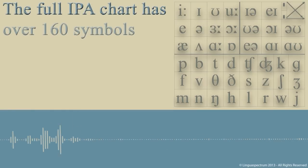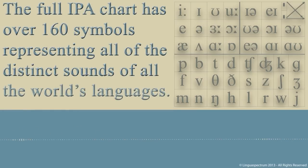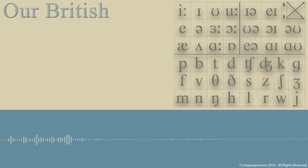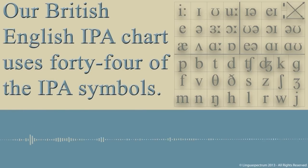The full IPA Chart has over 160 symbols representing all of the distinct sounds of all the world's languages. Our British English IPA Chart uses 44 of the IPA symbols.